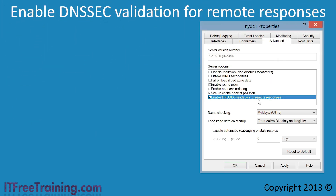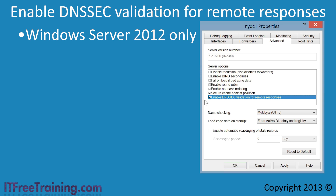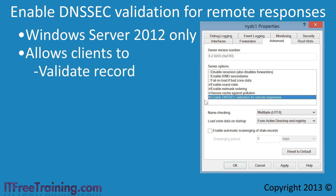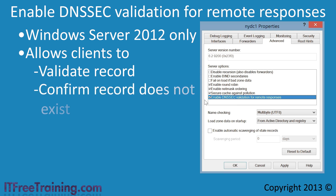The last option is enable DNSSEC validation from remote responses. This option is only available on Windows Server 2012 and is enabled by default. DNSSEC is a system that allows a client to validate a DNS record, essentially checking that the record returned has not been tampered with. DNSSEC can also be used to confirm that a DNS record does not exist, preventing an attacker from telling the client a record does not exist when it does, which would cause a denial of service attack. Enabling this option allows the DNS server to use DNSSEC options.